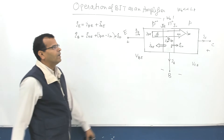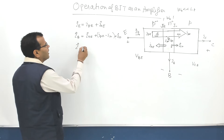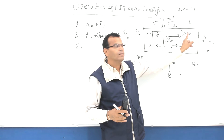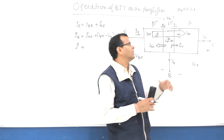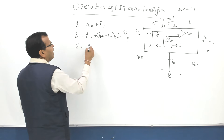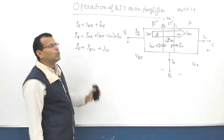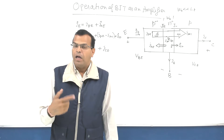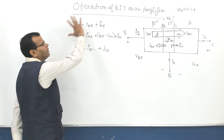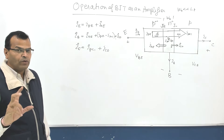The collector current IC has two components. First component: the component of current due to holes, that is IPC. Second component: due to the reverse saturation current IC0. So IC equals IPC plus IC0. I will be talking about these components again when we study the components of current in BJT, but for the time being, just remember these are the internal components of current in BJT.